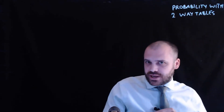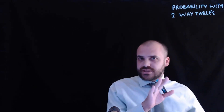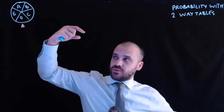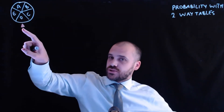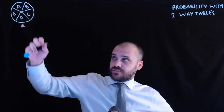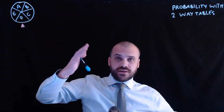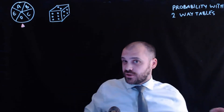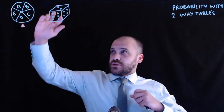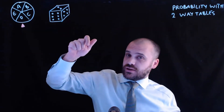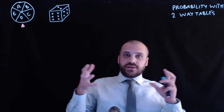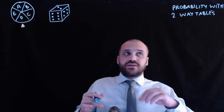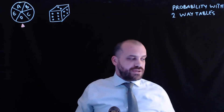We're going to be looking at probability with two-way tables. To get started, I need to show you two things. This is my magic wheel — I spin the wheel and whatever it's pointing to, that's the letter. So if I spin it and A is down here, then A is the letter. That's a dice, and you know how dice work. I'm going to spin this and roll the dice to get a result: a letter and a number. We can represent that using a two-way table.